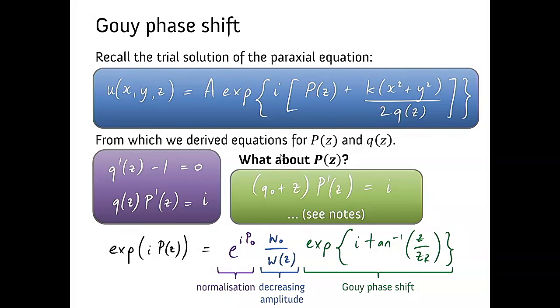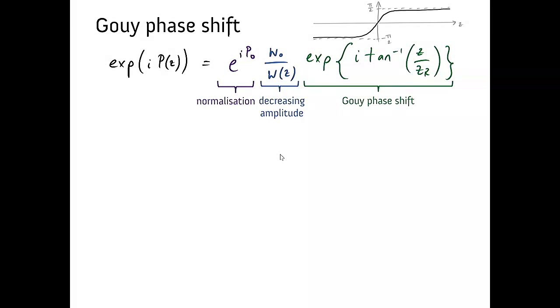Arctan goes from negative pi on 2, well below the origin, to pi on 2 for distances that are far from the origin. In other words, as I propagate through the waist, the beam will experience a phase shift of pi. We don't measure phase shifts. We measure intensity. When we stick a detector or our eyes in front of light, we see intensity. We do not see phase. If you ever want to see phase, you have to do an interference experiment.